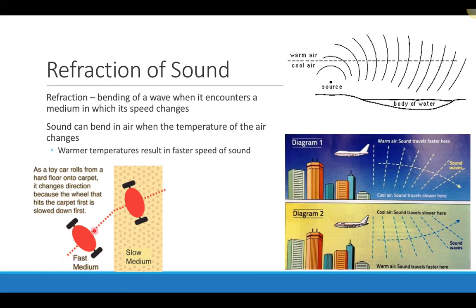A good conceptual explanation for refraction is to think of a toy car or a wagon traveling from a hard floor onto carpet. Suppose you're pulling a child in a wagon across concrete and you hit thick grass at an angle. The wheel that hits the grass first slows down while the other wheel is still on the concrete going faster, causing the wagon to change direction. Once both wheels are in the same medium, they travel at the same speed and continue in a straight line.